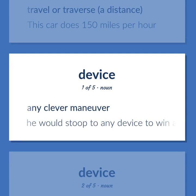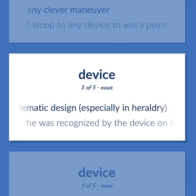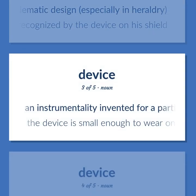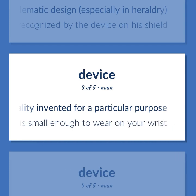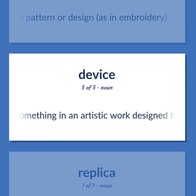DEVICE. Any clever maneuver. He would stoop to any device to win a point. An emblematic design, especially in heraldry. He was recognized by the device on his shield. An instrumentality invented for a particular purpose. The device is small enough to wear on your wrist. Any ornamental pattern or design, as in embroidery. Something in an artistic work designed to achieve a particular effect.